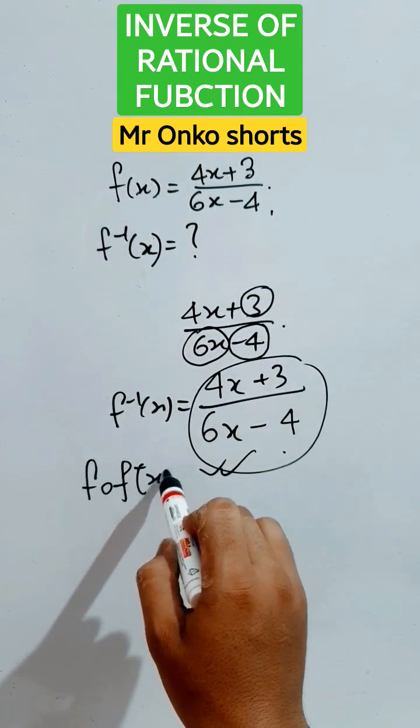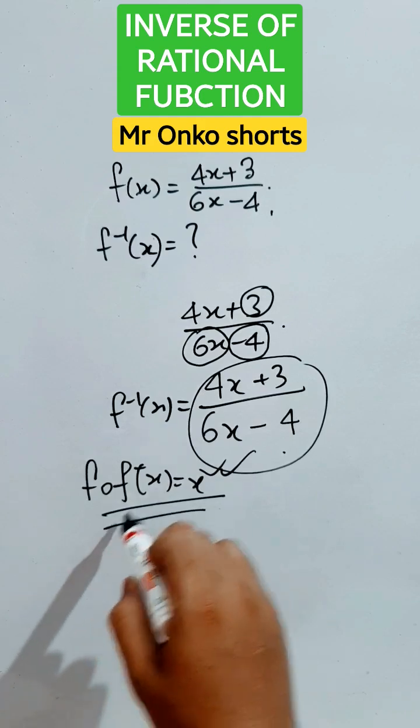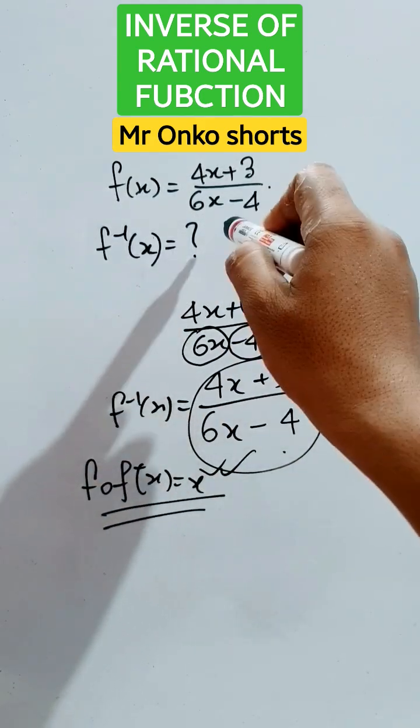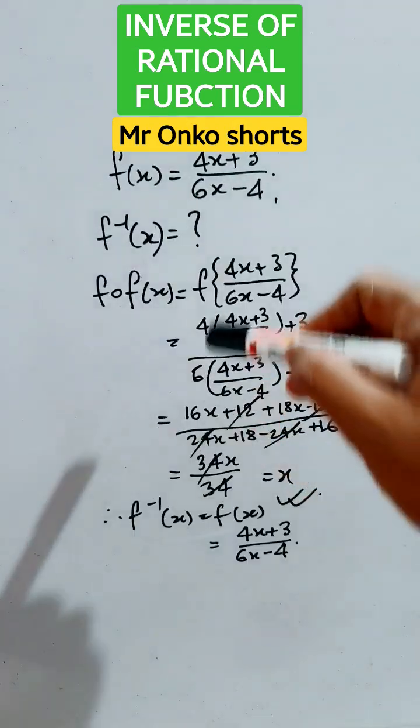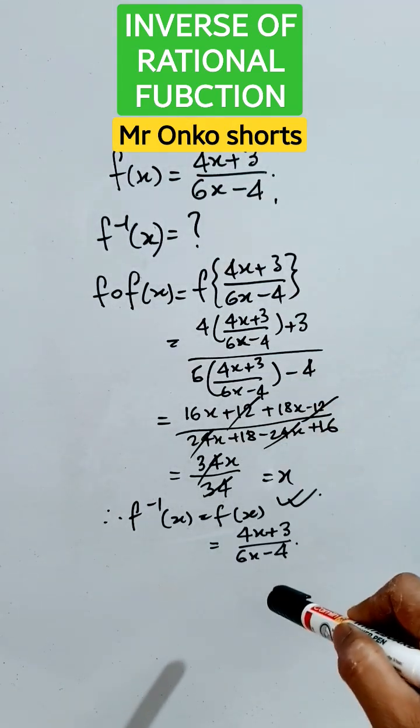So this implies that this is the inverse of the given function. The function is inverse of itself. That is the explained solution here, observe it.